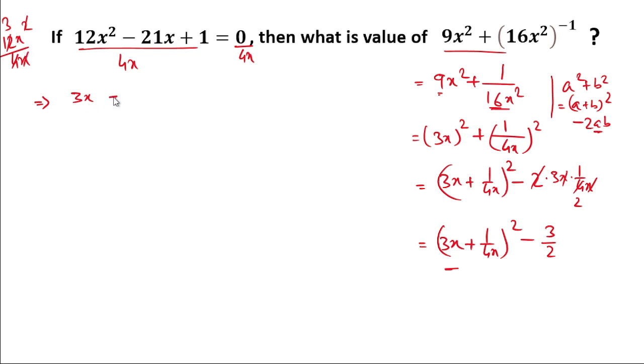Then 3x minus 21x divided by 4x, where x and x get cancelled, giving us 21/4. Plus 1 divided by 4x equals 0 divided by 4x, which is 0.